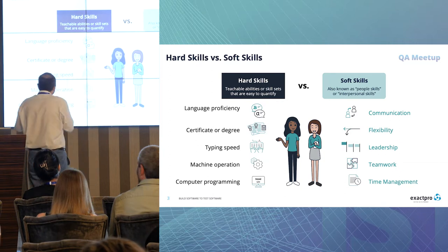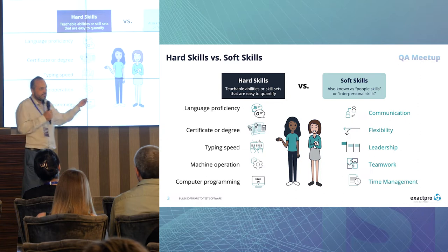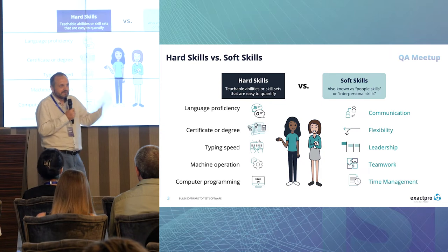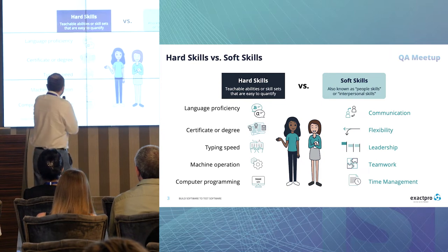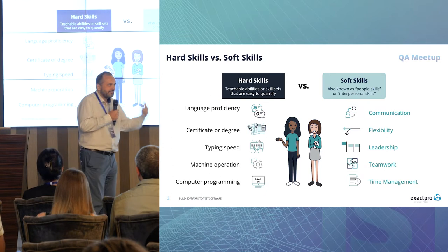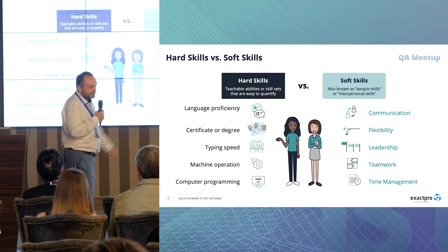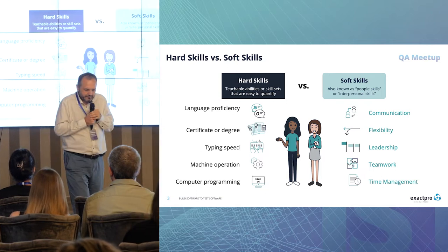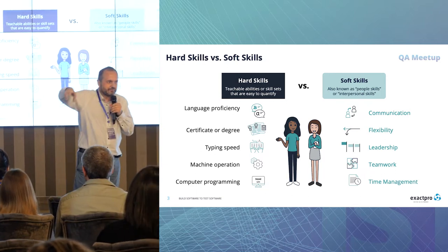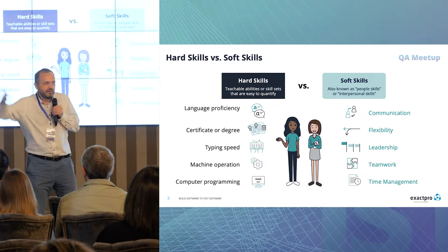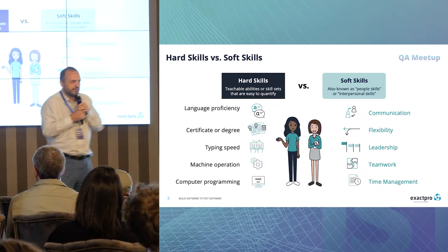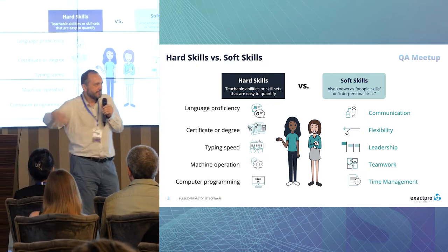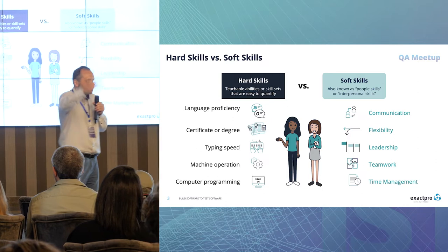For example, you expect language proficiency — A1, B2, C1 — something you can easily measure with tests or exams. Or a degree, typing speed, how many symbols you can type — you can easily measure that. This is exactly what you need to plan a business process: if a person has better hard skills, they are more productive, more inputs, more outputs, more money.